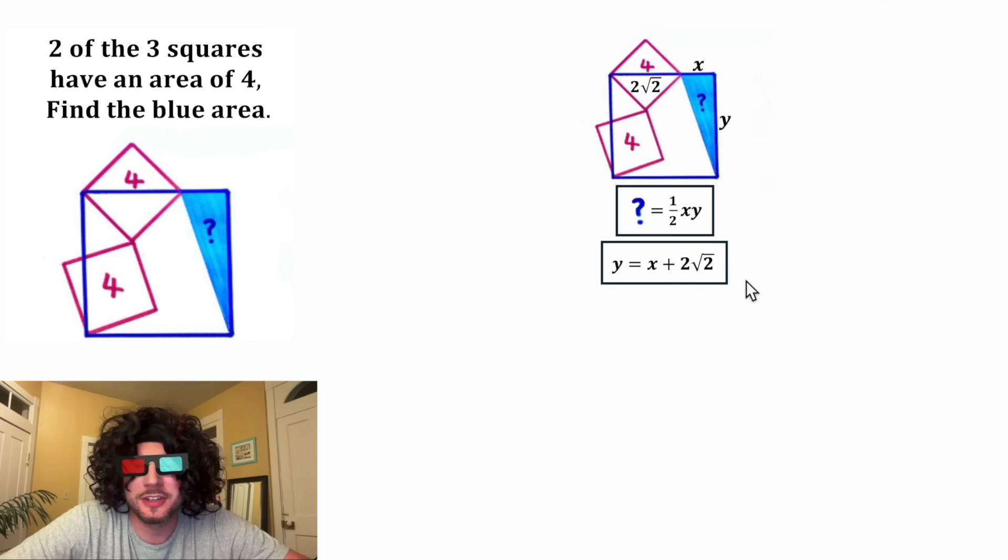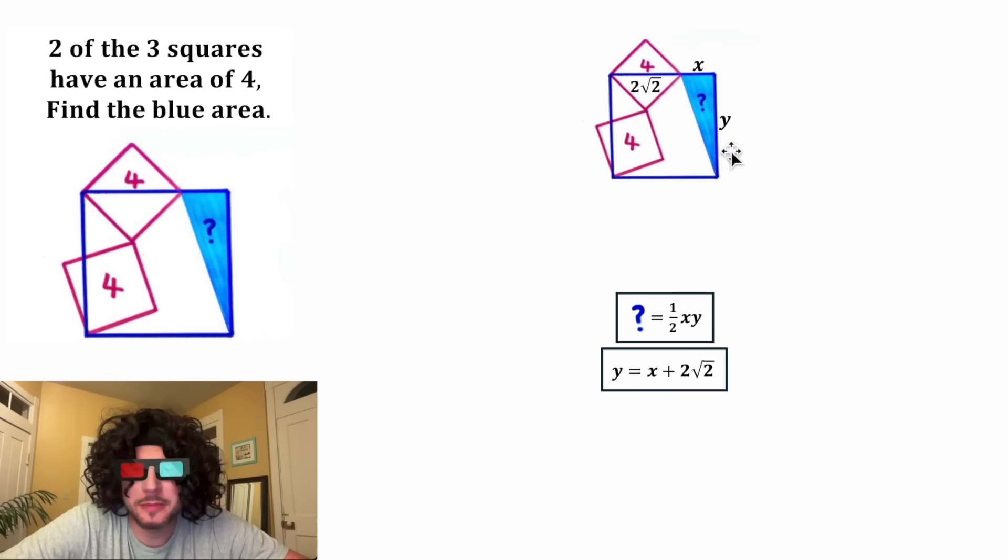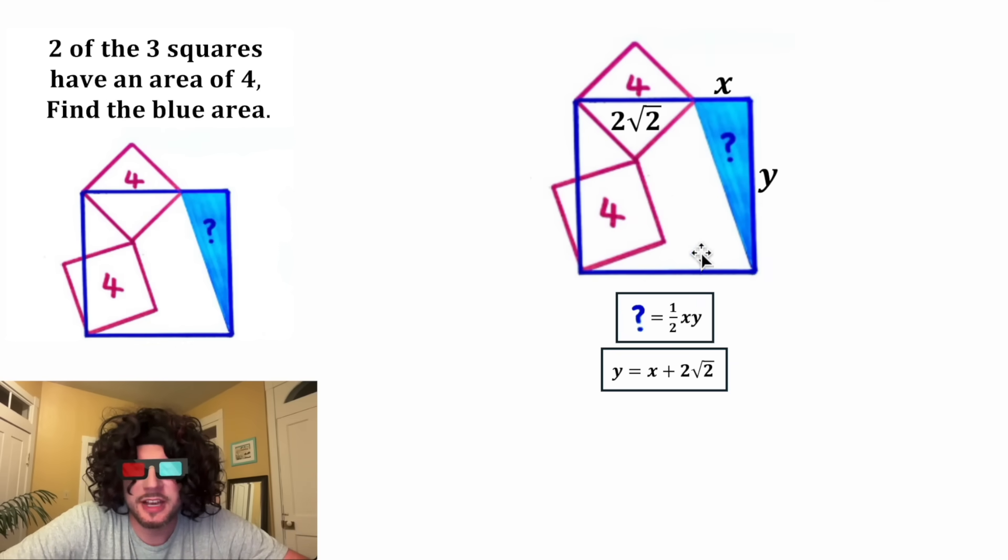And this looks important. Let's put a box around it and move it down here. I wonder if I can make this bigger. Let's enhance. And let's go from this intersection of these two squares and draw this segment perpendicular to this side. And let's finish up this right triangle.